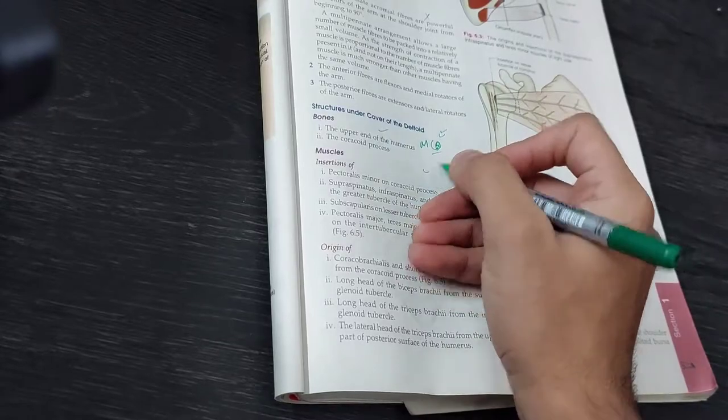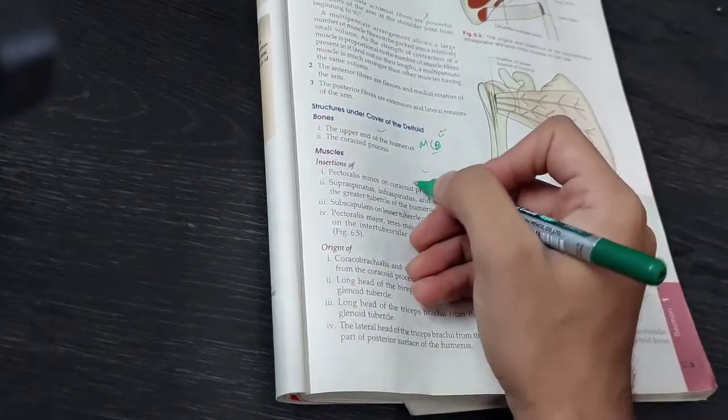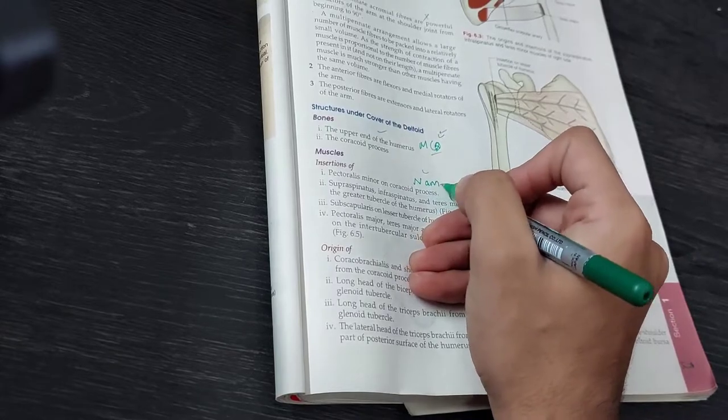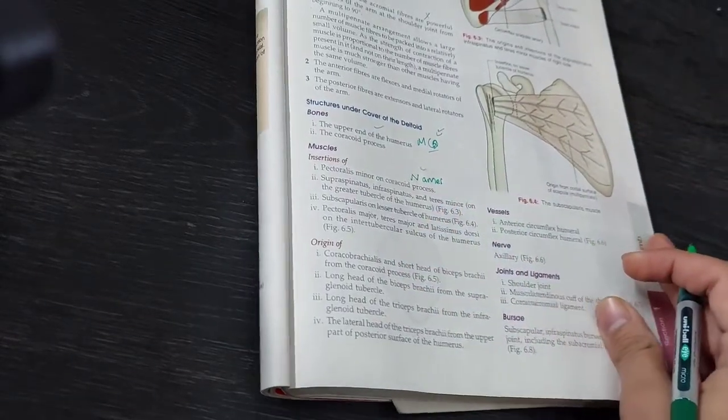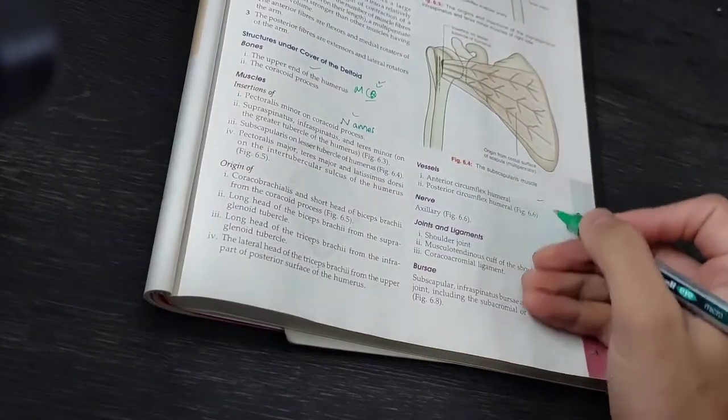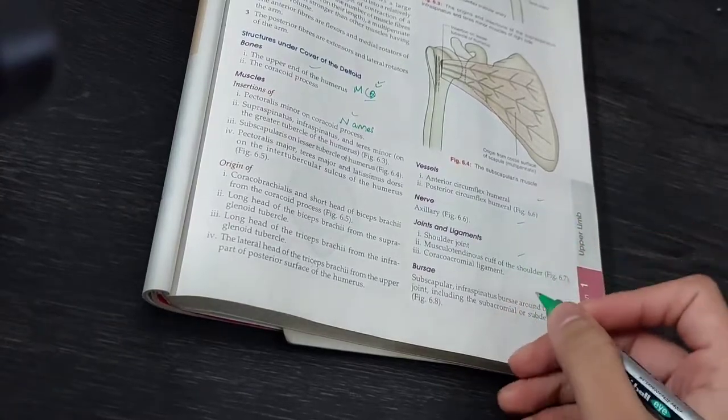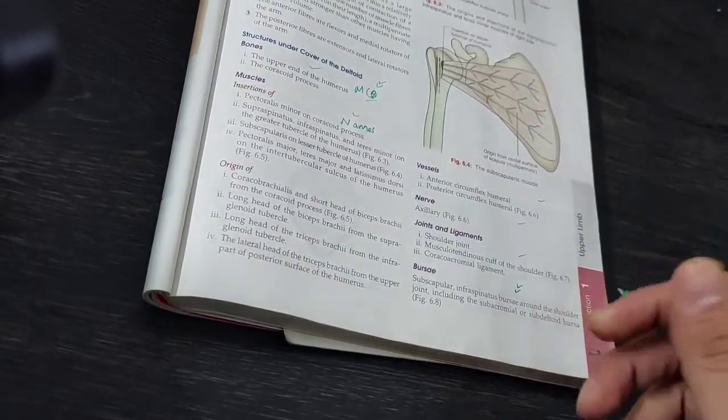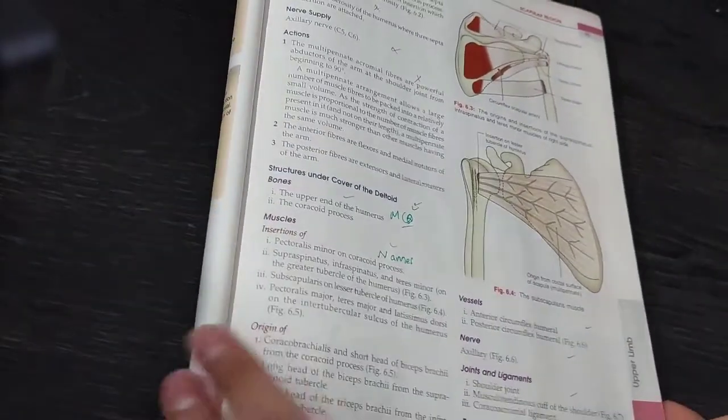They don't do it, just use your names. Muscles under the cover of the deltoids, and then vessels, nerves. And joints and bursas. Bursas' names are more important. And now we will go to the next page.